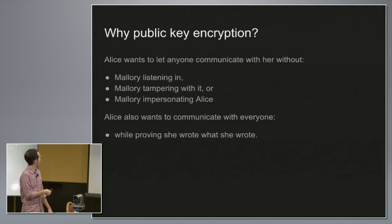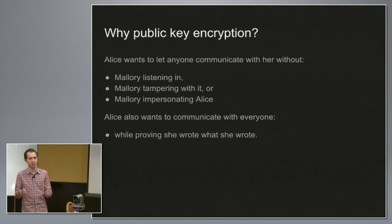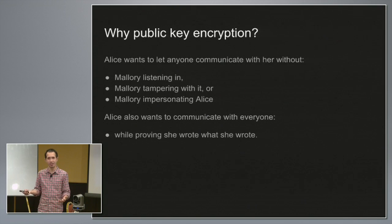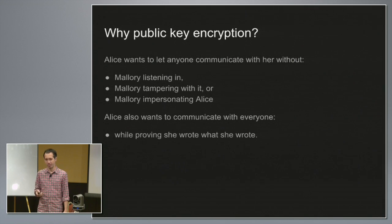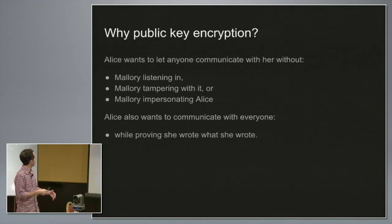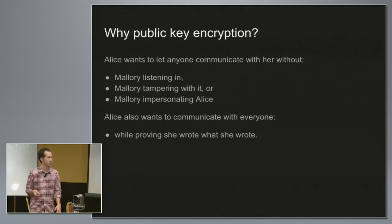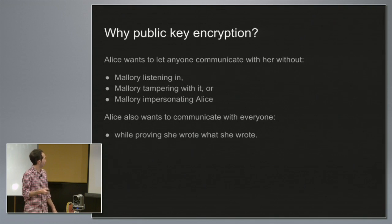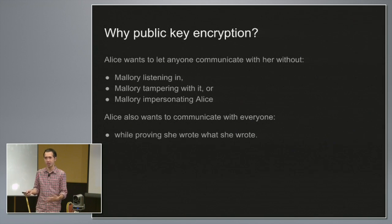So why public key encryption? In the previous slide, you have Alice and Bob with a single shared key, but then the question becomes how do you get a shared key between two people without those two people meeting? That turns out to be a hard problem. Public key encryption is a little different — it lets Alice let anyone communicate with her without Mallory listening in, tampering with it, or impersonating Alice. And it lets Alice sign messages so that she can prove that she wrote what she wrote.